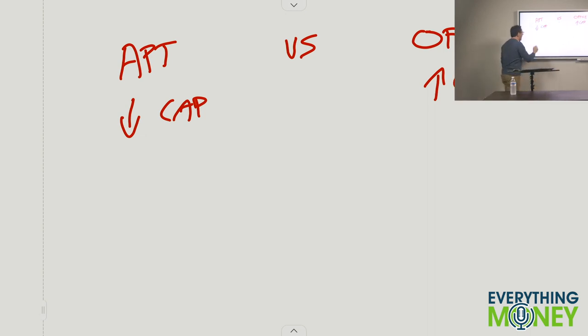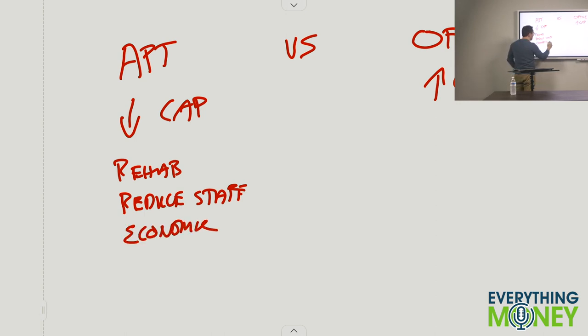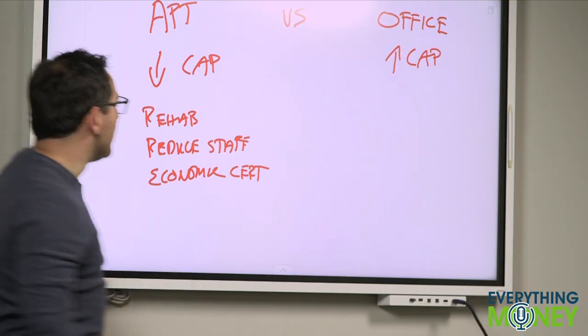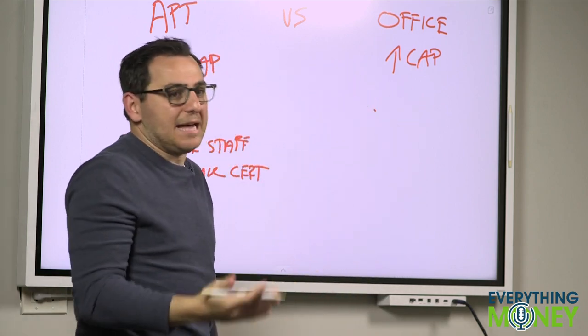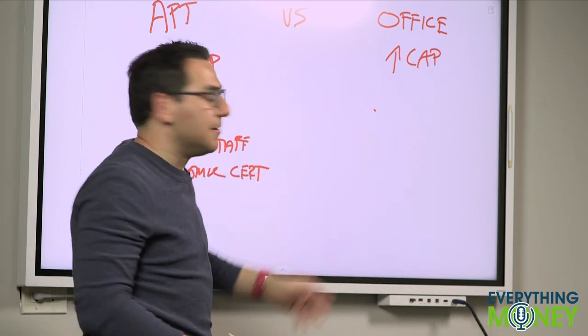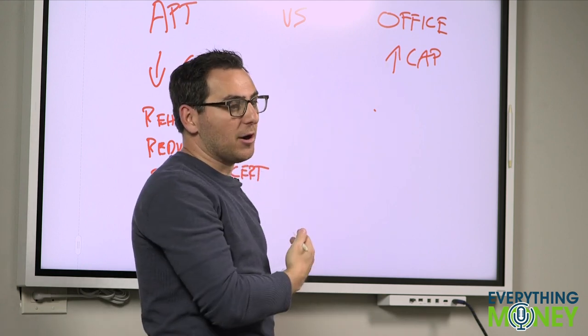In apartments, I can rehab. I can reduce staff. Well, I can do reduced staff. In a bad economy, people still have to live somewhere. Economic certainty is better. With office, I can't do any rehab. Rehab in office, if I rehab my office, I'm not going to get that much more in rent. I can't double, triple my income. It's harder to increase profit in office than it is in apartments.